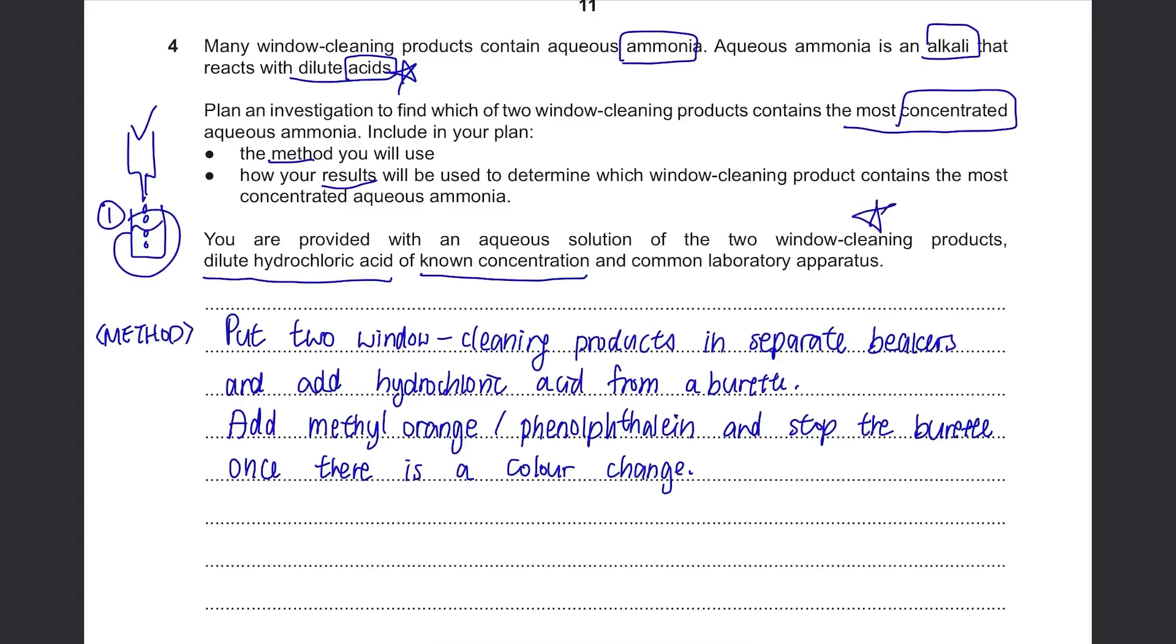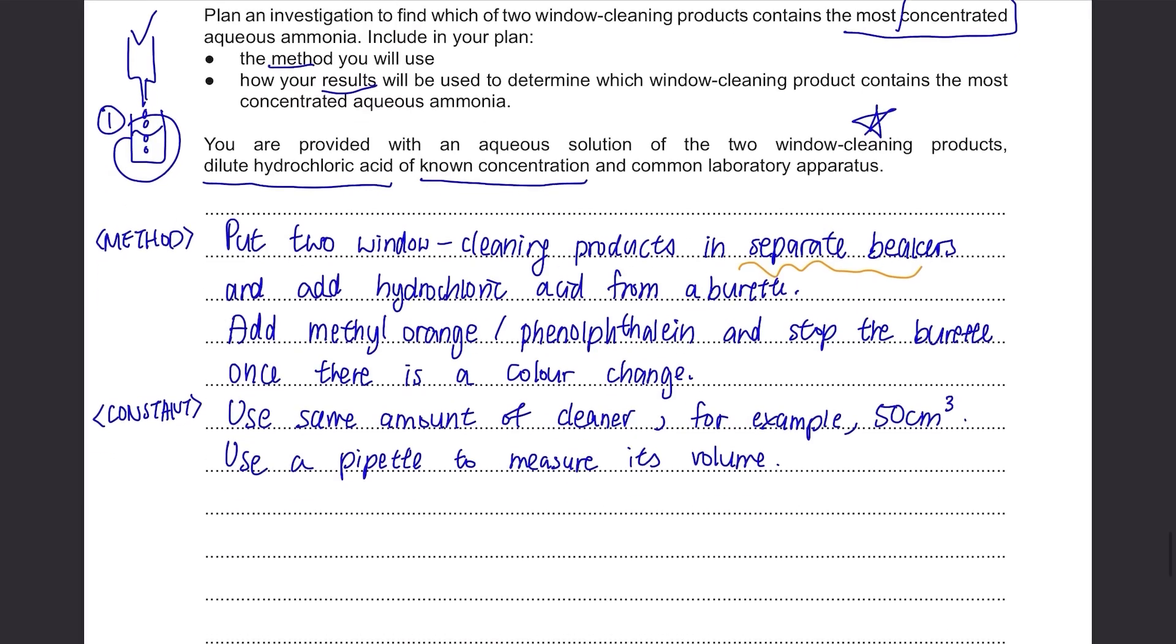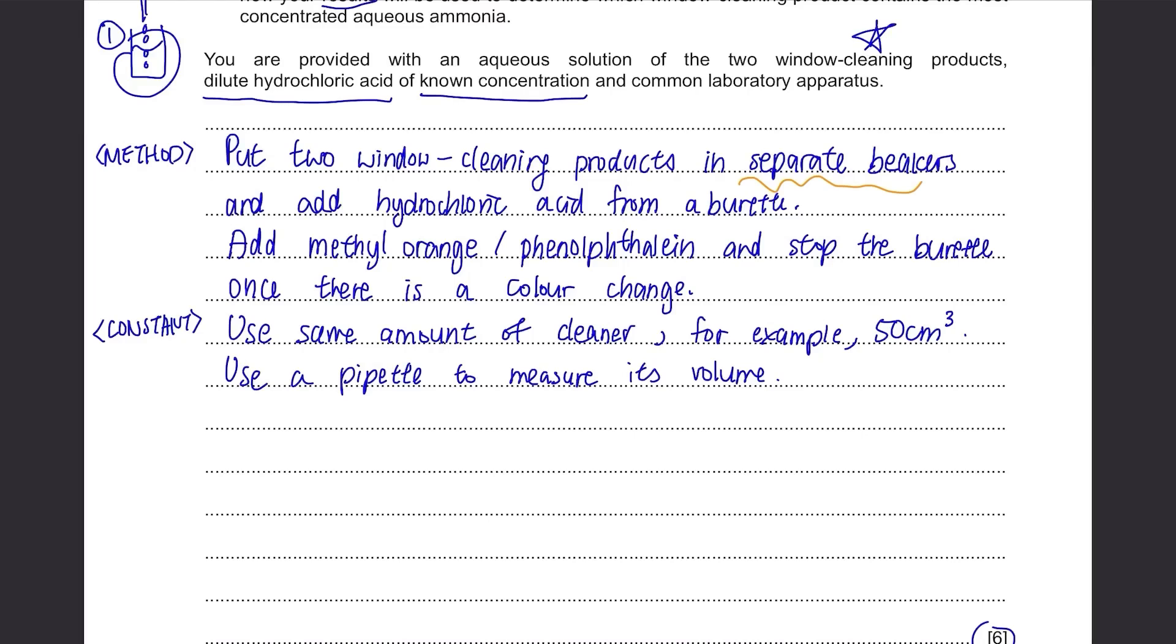The independent variable is the type of the window cleaning product. And we've already mentioned to use separate beakers and test them separately. So that's done. Then for the variables that need to be kept constant, you have to add equal volumes of each cleaner to the beaker. So for example, you can add 50 cm³ of cleaner product A and 50 cm³ of product B. And of course, you have to measure it. So it's good to state how you're gonna measure it. Maybe you can use a pipette or a measuring cylinder. And this will give you one more mark. Now it's time to talk about the dependent variable. So the dependent variable is the volume of hydrochloric acid added. And we can just find it out by reading from the burette how much it has been used. Then you can record the volume of acid added.